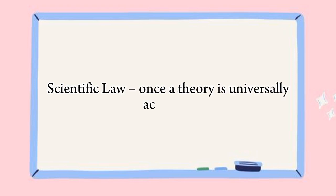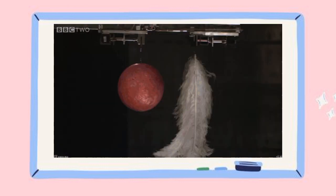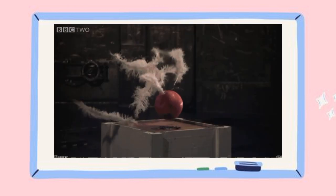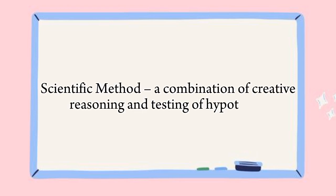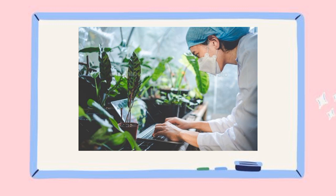A scientific law is a statement that describes something that always happens in nature. For example, the law of gravity states that objects with mass are attracted to each other. Once a theory is universally accepted, it becomes a scientific law. The scientific method involves using creative reasoning and testing hypotheses to learn more about the world. For example, scientists might study how different factors affect plant growth, starting with a hypothesis such as adding fertilizer helps plants grow faster, then designing an experiment with two groups of plants — one with fertilizer and one without — and using the results to refine their understanding.